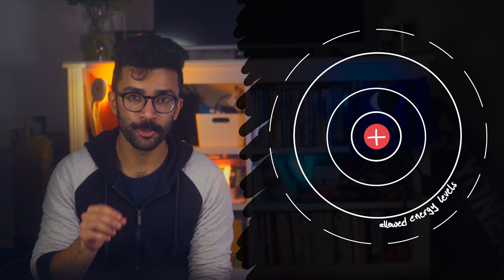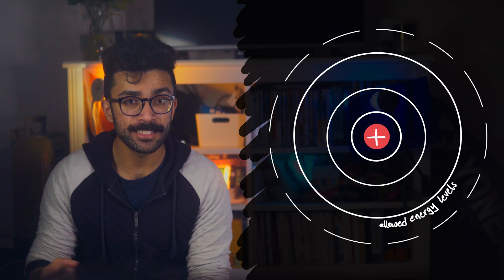Bohr realised that in order for the emission frequencies from his model to match those found in experiments, the energy levels had to be in very specific places. Remember that in these energy levels, Bohr assumed that the electrons were indeed orbiting the nucleus, just like Rutherford thought. And because they were orbiting,